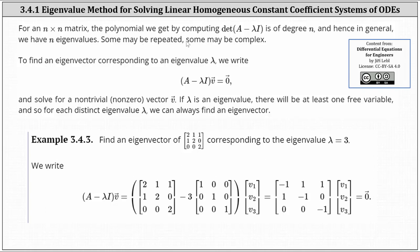For an n by n matrix, the polynomial obtained by computing the determinant of (A minus lambda I) is of degree n, and hence in general we have n eigenvalues. However, some may be repeated and some may be complex. To find an eigenvector corresponding to an eigenvalue lambda, we write (A minus lambda I) times vector v equals the zero vector and solve for the nontrivial vector v. If lambda is an eigenvalue, there will be at least one free variable, and for each distinct eigenvalue lambda, we can always find an eigenvector.